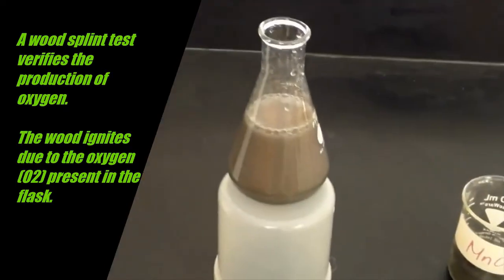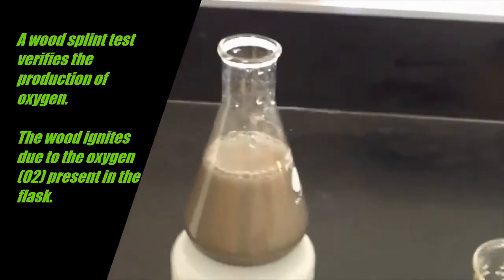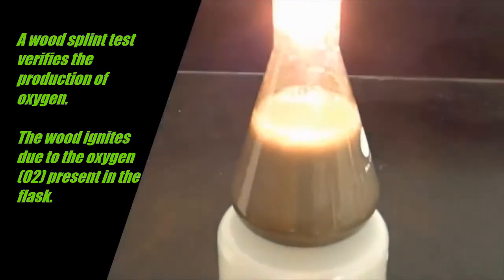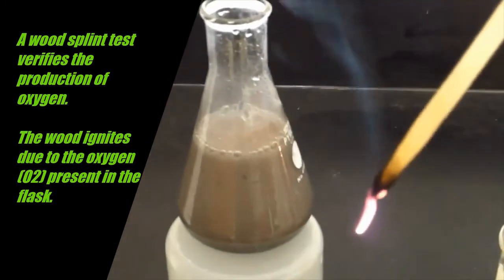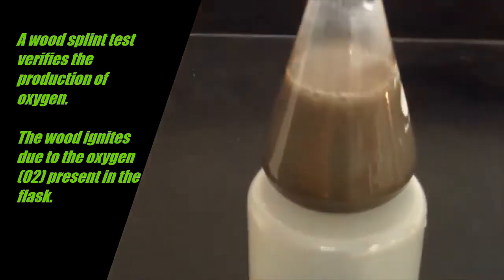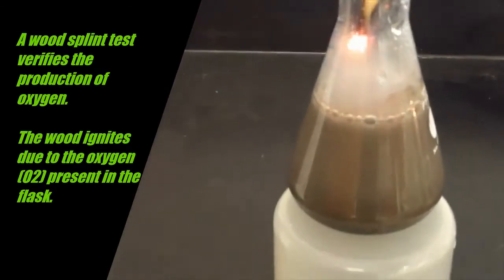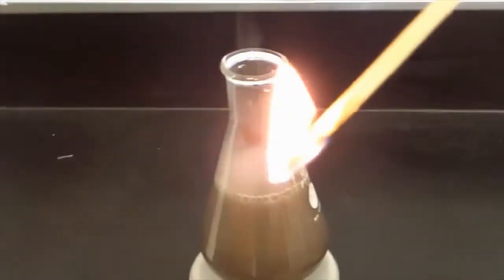Oxygen. A wood splint test can be done to prove that oxygen gas is being made by the reaction. Once the reaction is going, there is a high concentration of oxygen in the upper part of the flask. This causes the piece of wood with the glowing ember to reignite and start burning again. The driving force of this reaction is the addition of the MnO2, which is the catalyst.